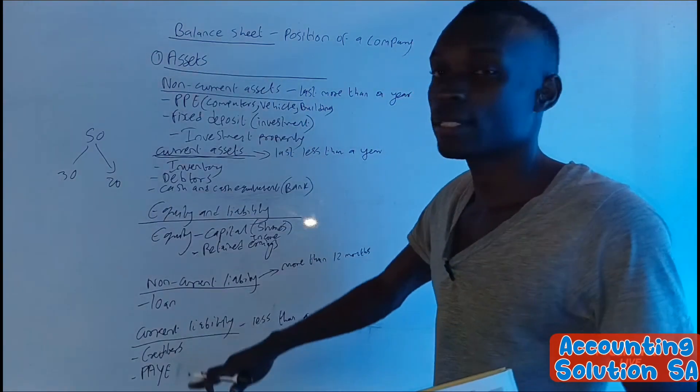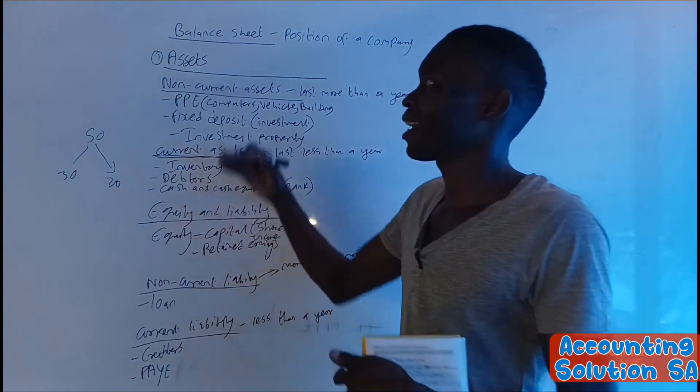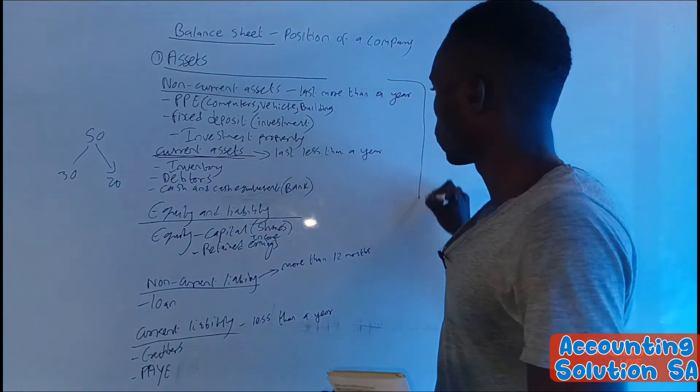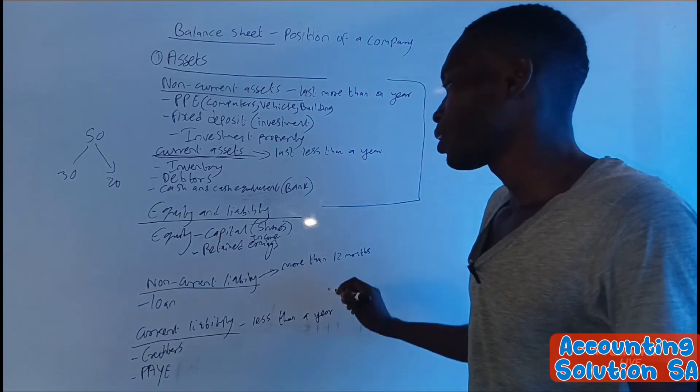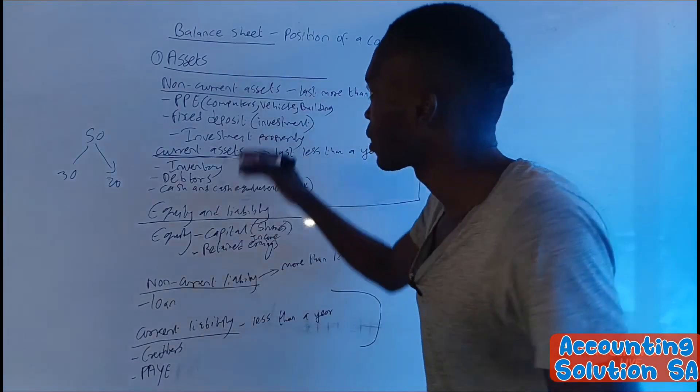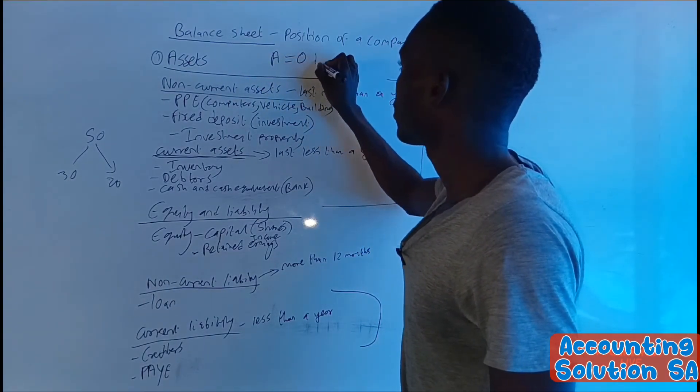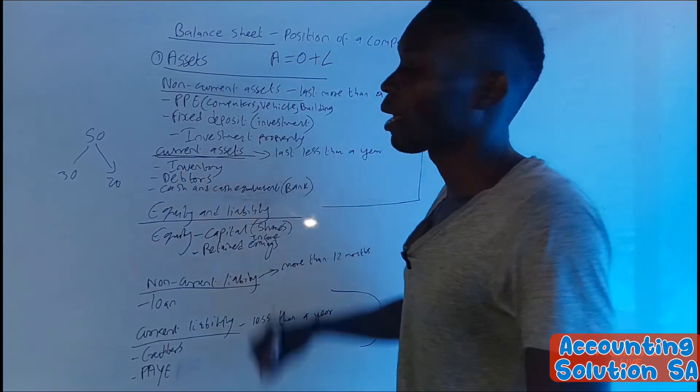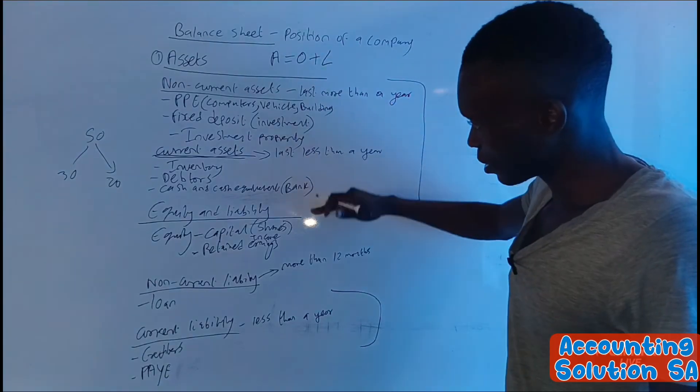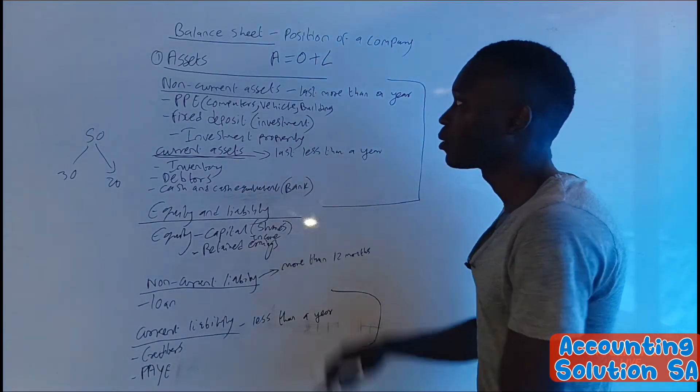So this is how the balance sheet looks like. When we prepare a balance sheet, we want to see how many assets do we have compared to liability. That's why the equation says assets is equal to owner's equity plus liability. In other words, assets - this part is equal to these two parts.